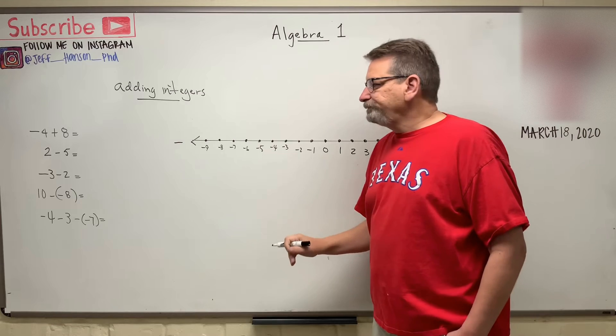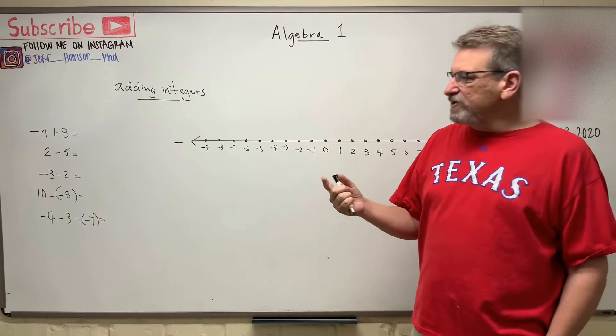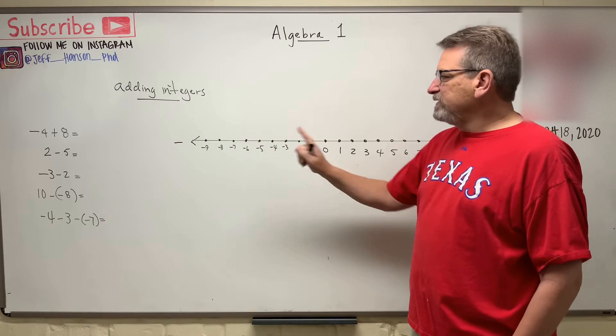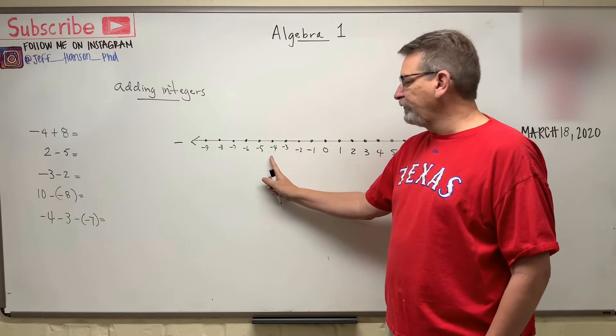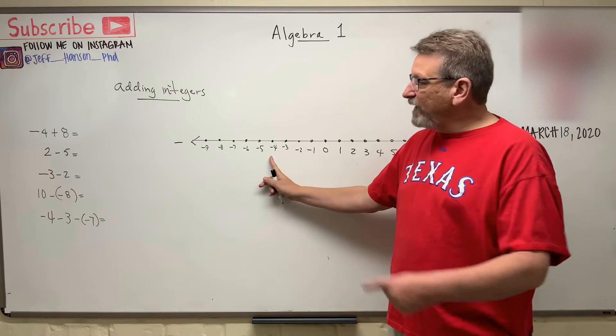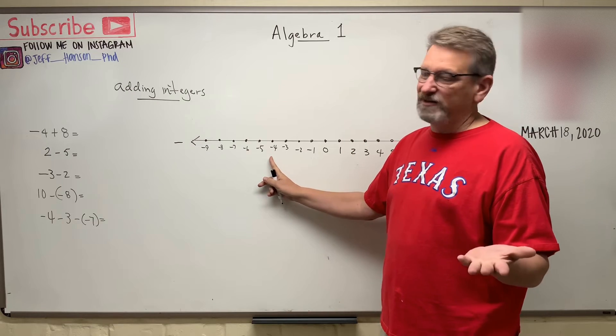Now, one way you can do this is just look at a number line, right? So negative four, let's go negative four: one, two, three, four. That puts us over here, and then if I add eight to that, I'm going to get to the answer.